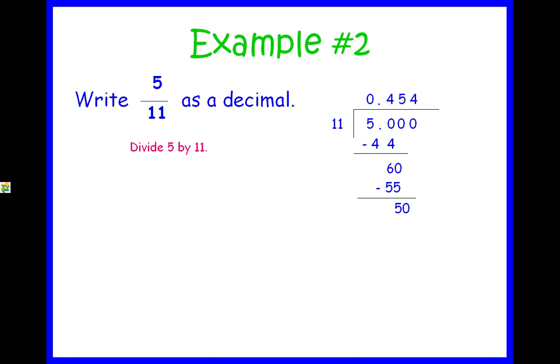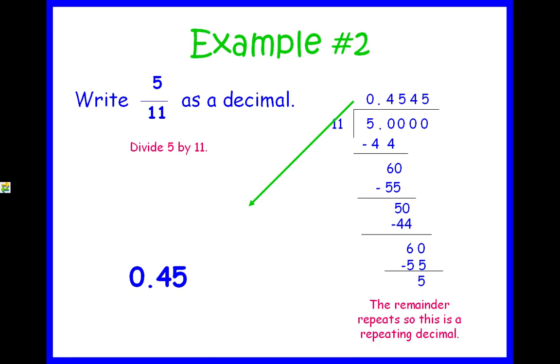Add another zero, bring it down. Eleven goes into fifty four times. Eleven times four is forty-four. Subtract, you get six. Add another zero, bring it down. Eleven goes into sixty five times. Get fifty-five, and subtract and get five. If you have already noticed, there is a pattern. You're going to get the same remainder. It repeats, so this is going to be a repeating decimal. So, our answer is going to be .454545, and the way we can write that is to just write the numbers that repeat and put a bar over it. This is considered bar notation.